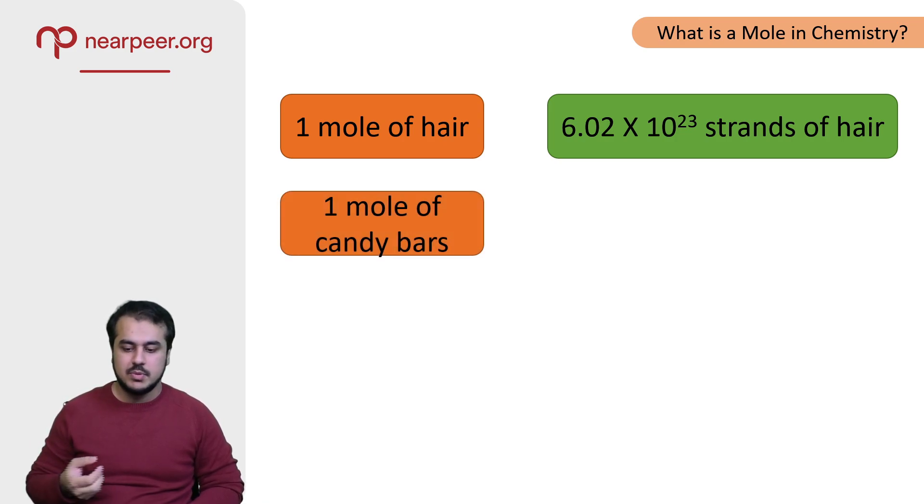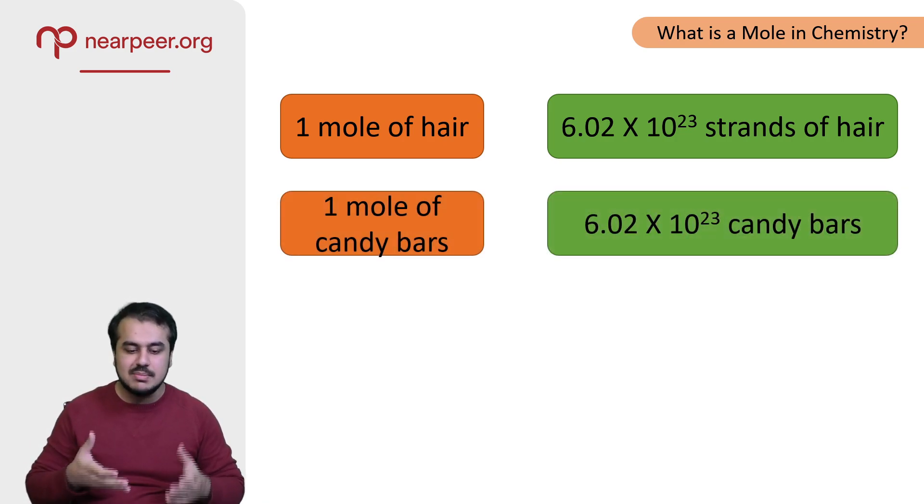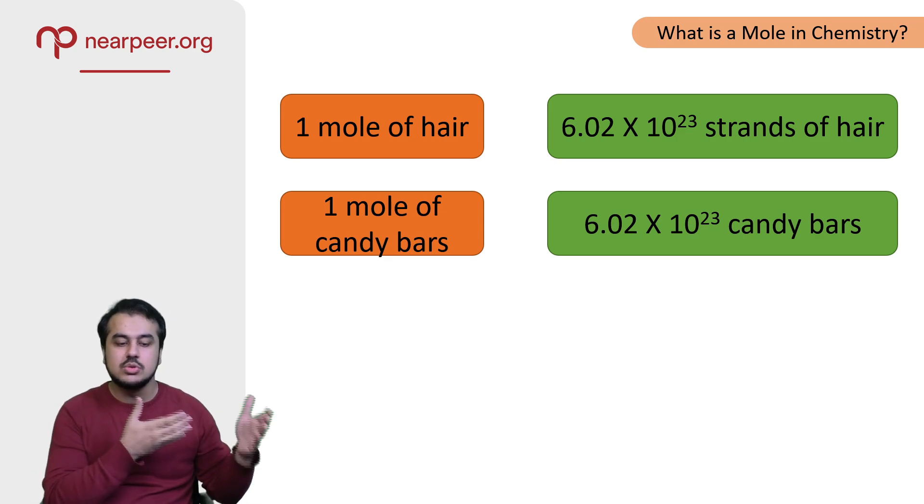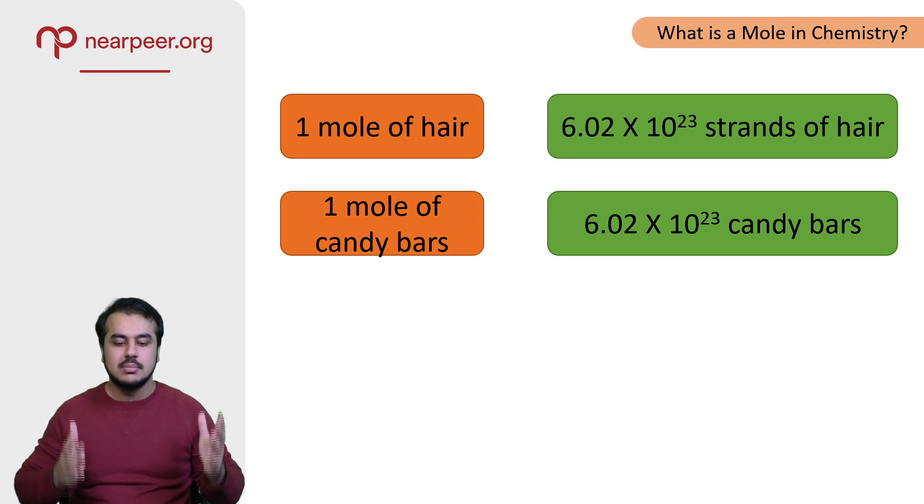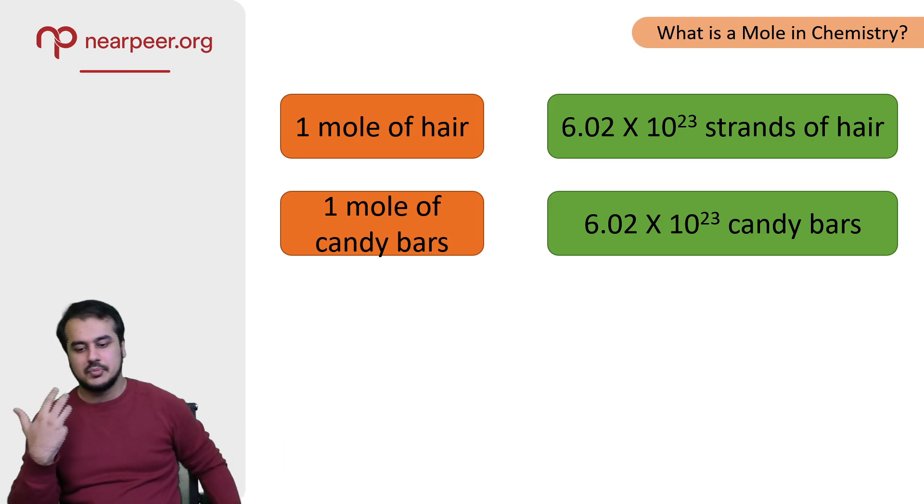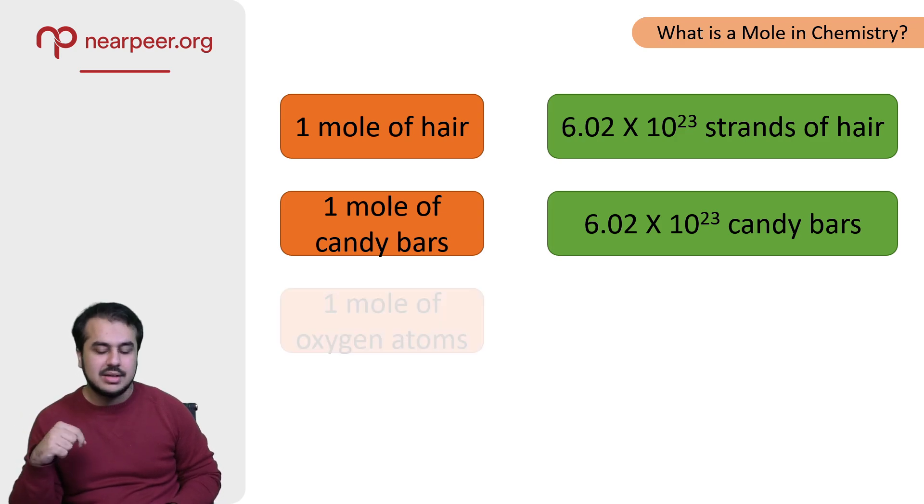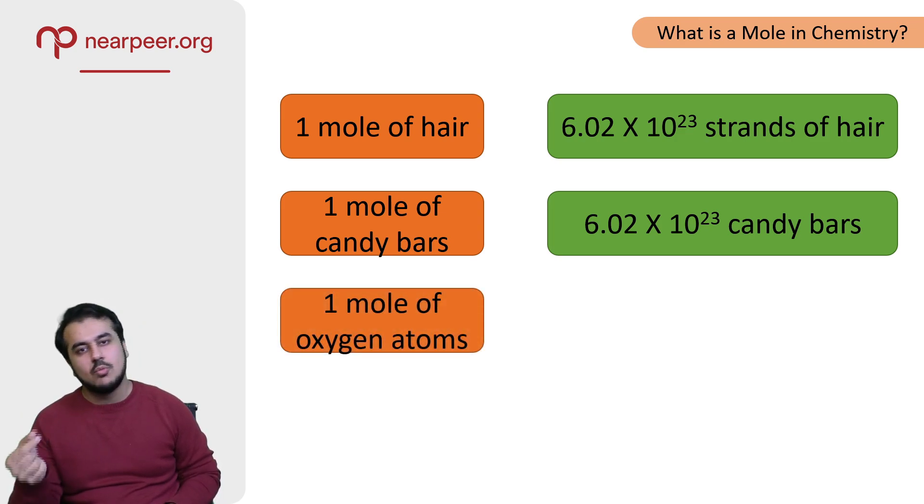If someone says I have a mole of candy bars, one mole of candy bars, it would actually mean they have 6.02 times 10 to the power 23 candy bars. Nobody has this many candy bars, but I'm just trying to explain the concept or the use of this terminology. Now in reality, we would say one mole of oxygen atoms.